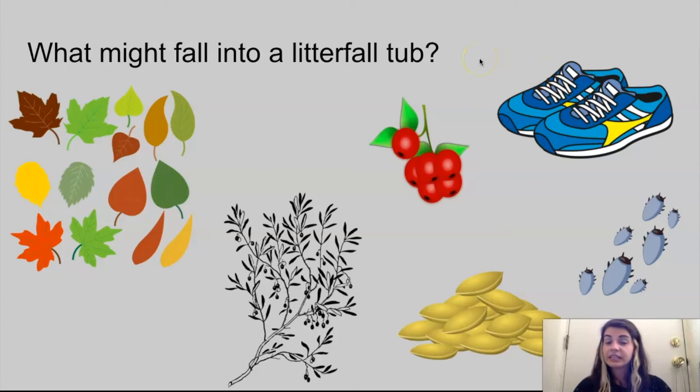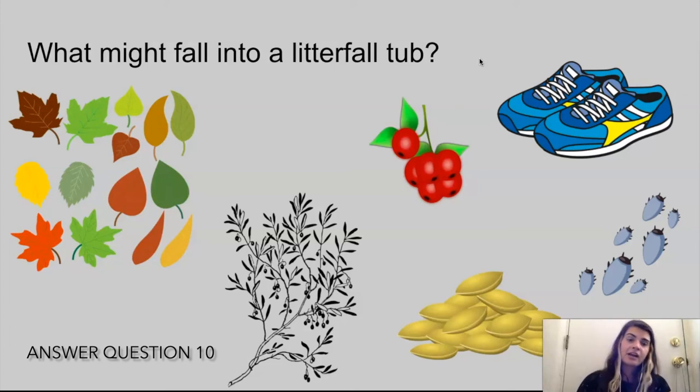What might fall into a litterfall tub? We could have different leaves, branches, fruits, seeds. There might be bugs that fall in or other animals, maybe shoes. Really anything you could think of has probably gone into these litterfall tubs. But what we're primarily looking for is our plant material: leaves, branches, fruits, and seeds.